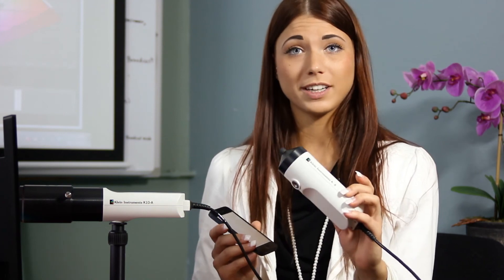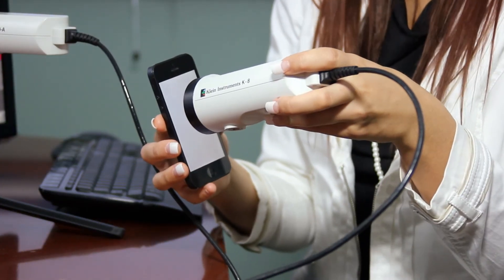If you are measuring a small display, like on a camera or a phone, our K8 will do the trick. Simply position the unit straight on and directly toward the screen.